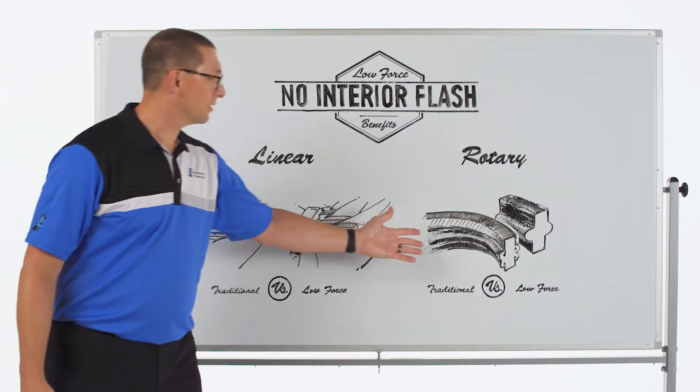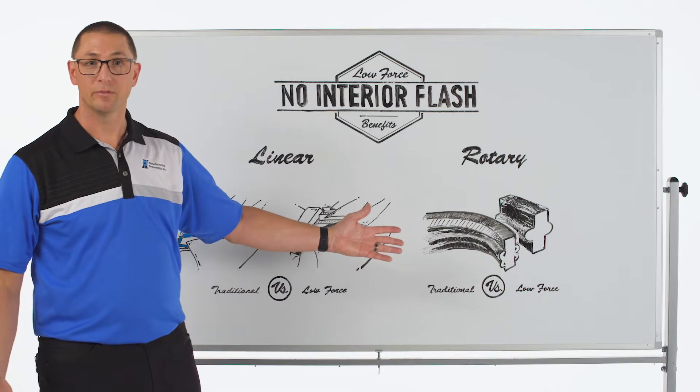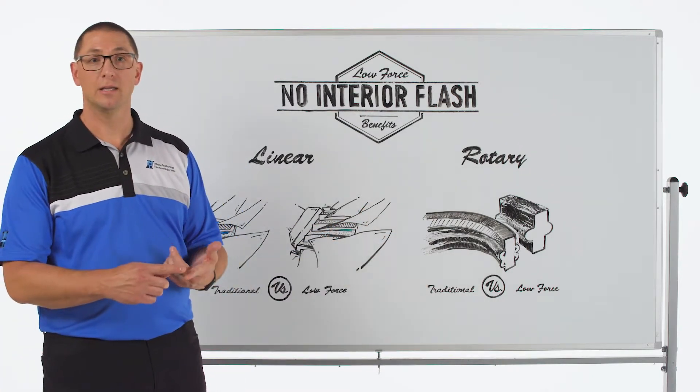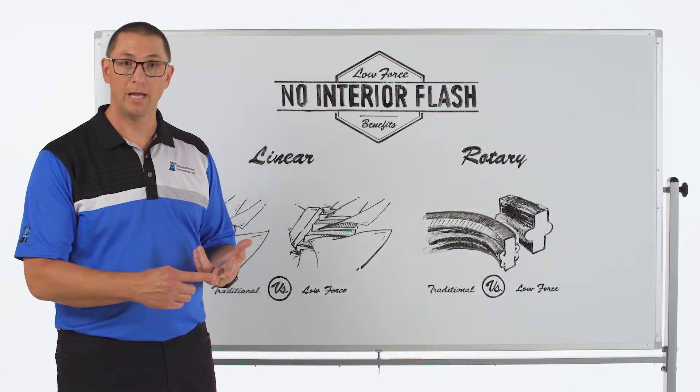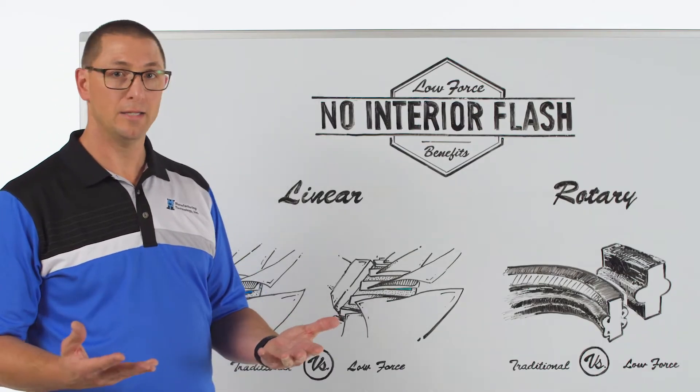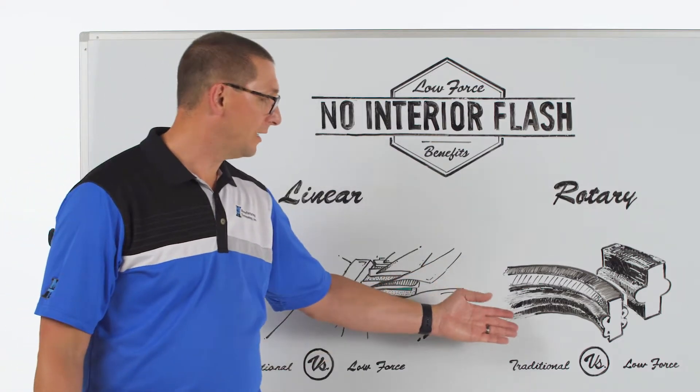On the rotary side we're going to talk about welding of pipes or tubes. Certain applications might be rock drilling, water drill pipe, oil drill pipe, hydraulic cylinder bodies where we need to remove the ID flash.